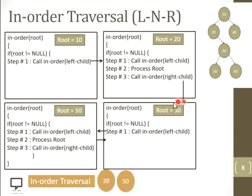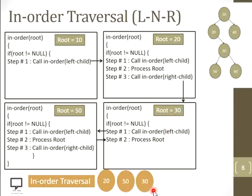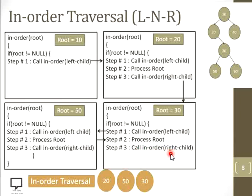After returning back, 30 plays the role of root node again. The next statement is processing the root node, so it displays 30 in the in-order traversal. Now let's go for statement 3 — calling the in-order function recursively by passing the right child of 30, which is 60. We pass 60 as a parameter.